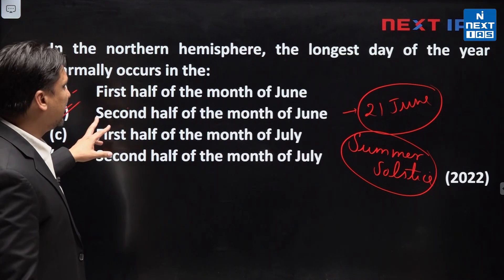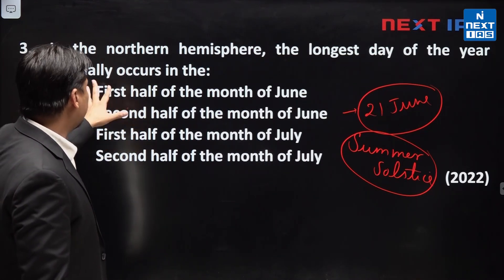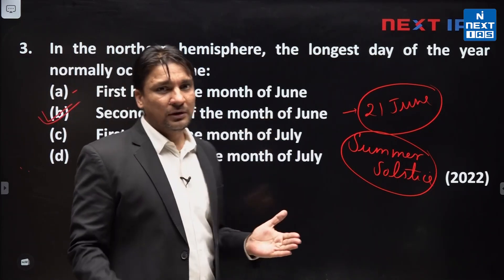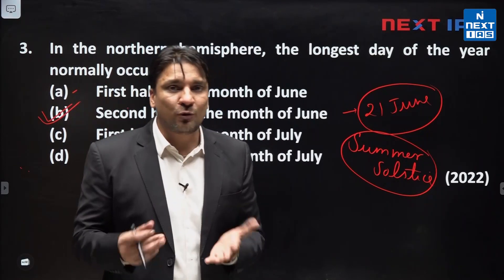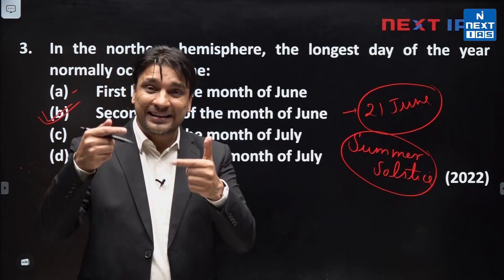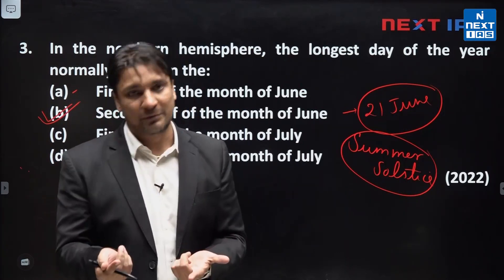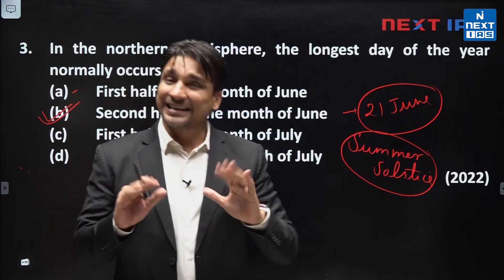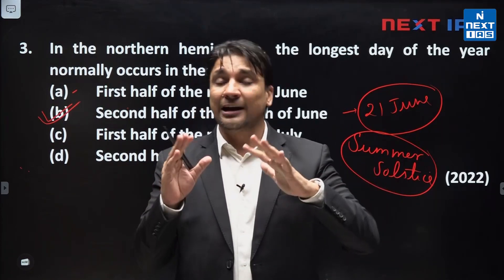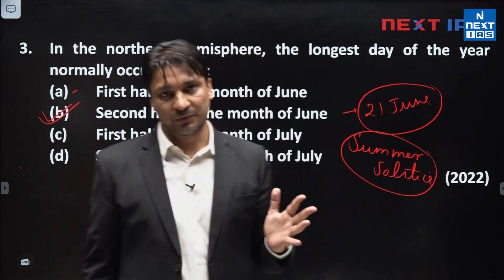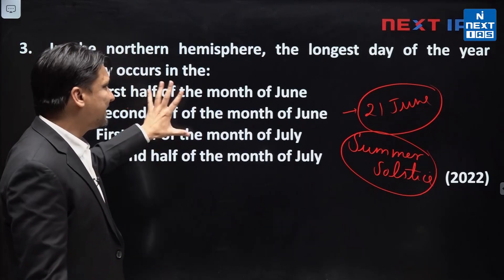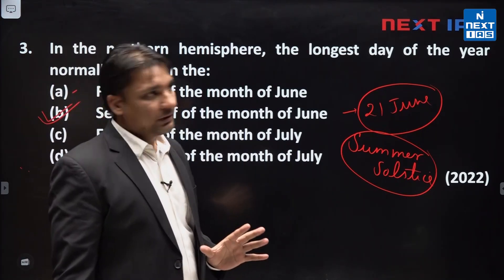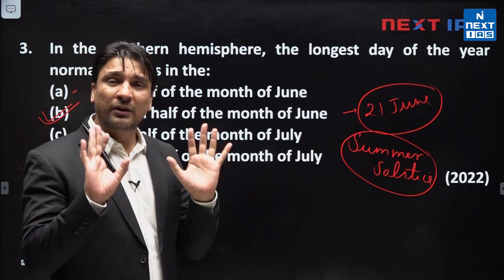So the second option — second half of June — is the correct answer. If December had been an option, it would also be relevant because in December we experience the longest day in the southern hemisphere and shortest day in the northern hemisphere. On 22nd December, the longest day is in the southern hemisphere and the longest night is in the northern hemisphere. Since this question specifies the northern hemisphere, the second option is correct, and there is no scope for confusion.